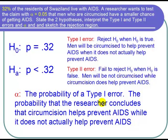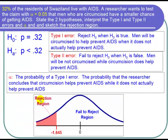Finally, let's find the rejection region. Alpha is 0.05 and we have a left-tailed test. If we have a large enough sample size, we'll have a normal distribution for the sampling distribution. The probability of 0.05 on the left-hand side corresponds to a critical value of negative 1.645. From the table, the probability of being less than negative 1.645 on a standard normal distribution is 0.05. So the rejection region is to the left of negative 1.645, and the fail-to-reject region is to the right.